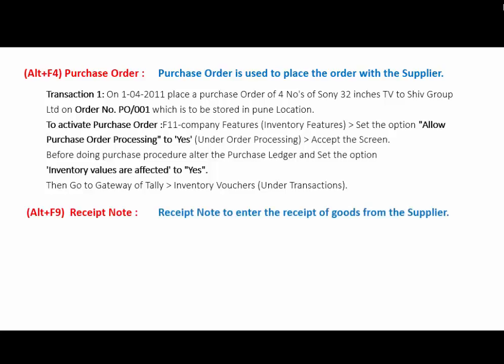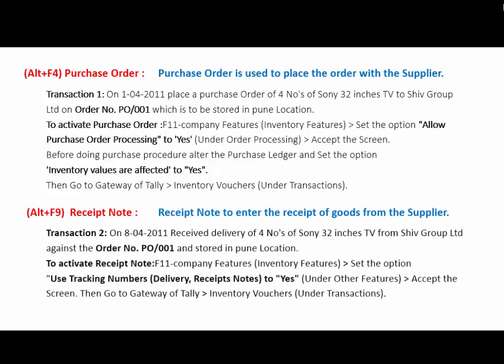The Receipt Note is used to enter the receipt of goods from the suppliers. The transaction: on 8th April 2011, received delivery of 4 units of Sony 32-inch TV from SHU Group Ltd., against order number 001, and store it in Pune location. To activate the receipt note, press F11 Company Features, then go to Inventory Features, and set Use Tracking Numbers in Delivery/Receipt Notes to Yes, under the heading Other Features, and accept the screen.